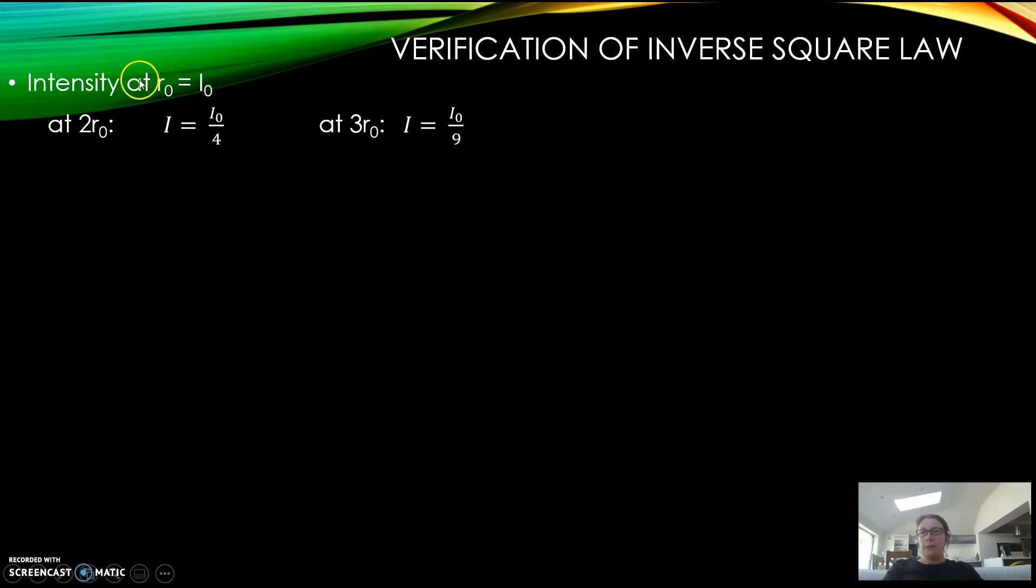If the intensity at an initial radius r₀ is I₀, if you double r₀, the intensity will be a quarter of what you already have because two squared is four. If you're at a distance three times as far, three squared is nine, so your intensity goes down by nine.